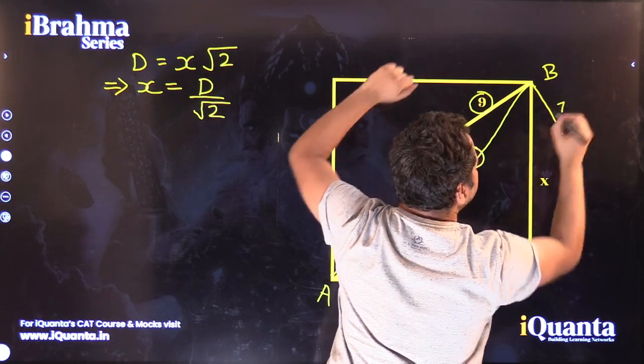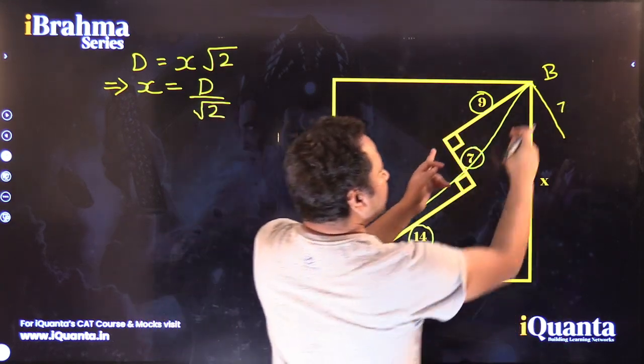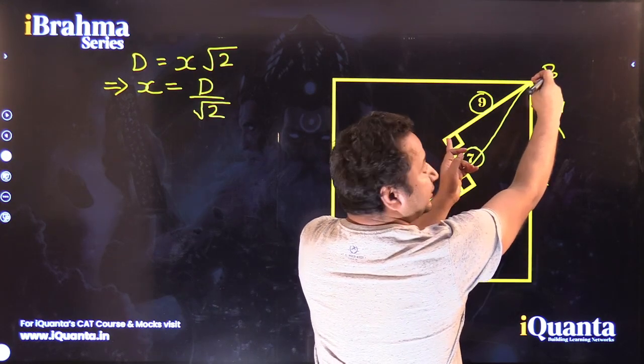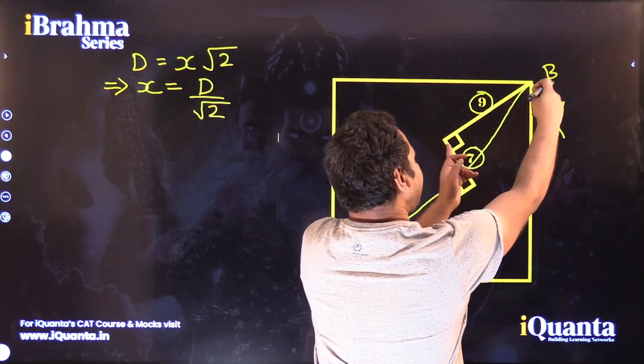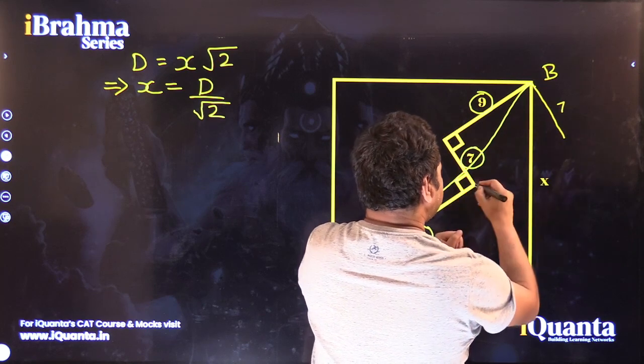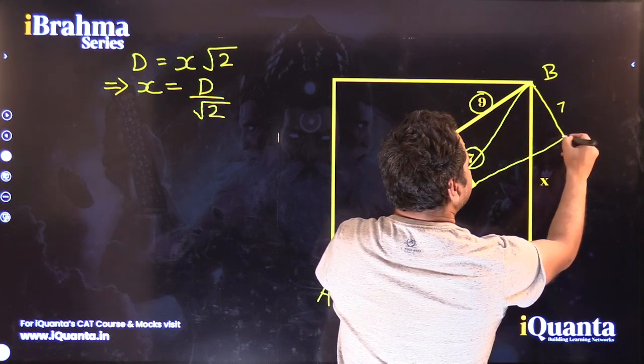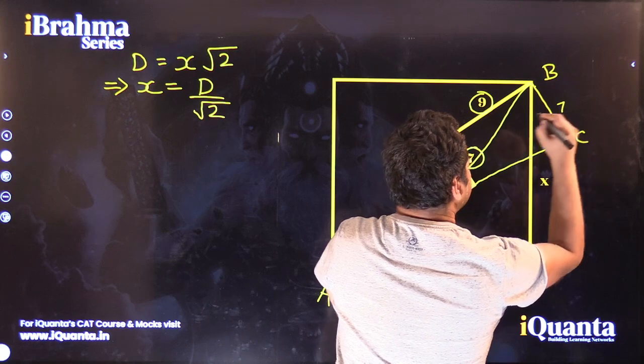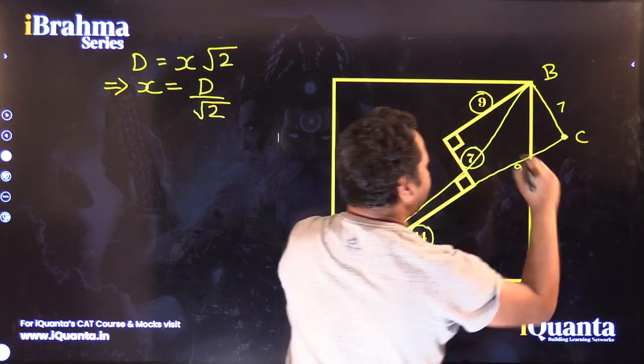This will be 7 units in length. And similarly, this line of length 9 units, if I push it downwards, this will actually coincide here. Let this point be C. This is 9. I hope this is clear.